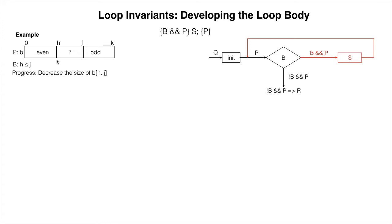The invariant is given by the array diagram. B is, H is at most J. We make progress toward termination by decreasing the size of the segment, B sub H dot dot J.